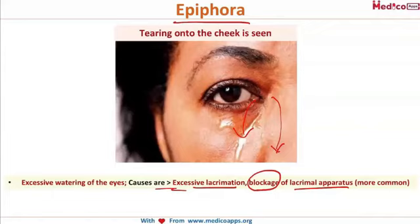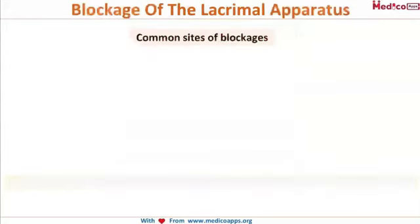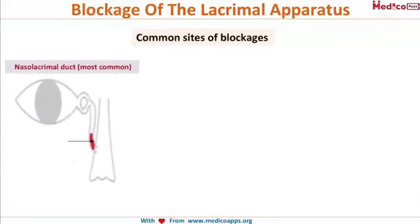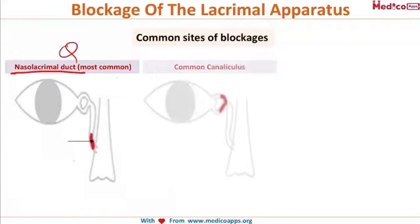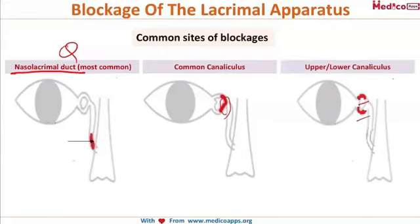Blockage is more common than excess secretion, so we'll focus on the types of blockage, their location, and their management. The most common site of blockage of the lacrimal apparatus is the nasolacrimal duct — this is a very commonly asked question. The next most common is the common canaliculus, followed by the upper and lower canaliculi.